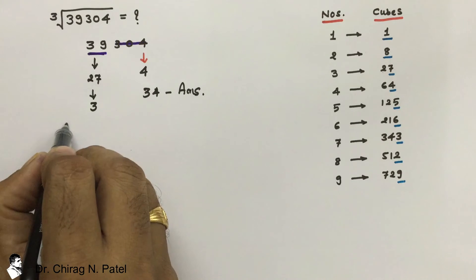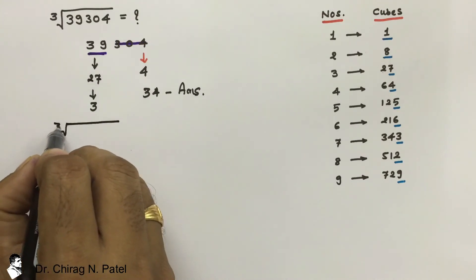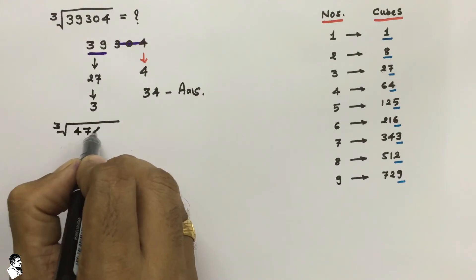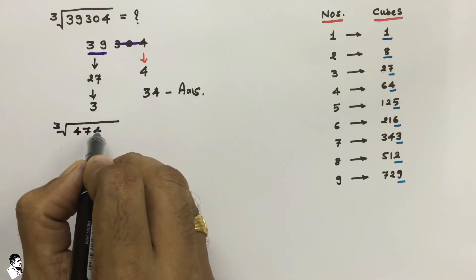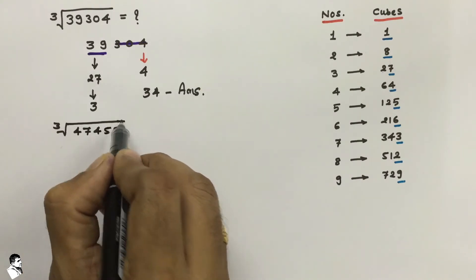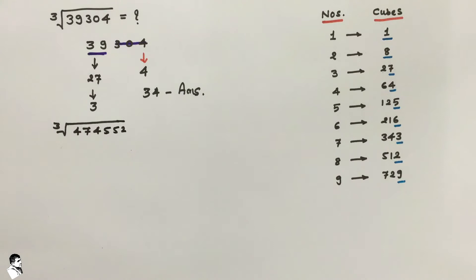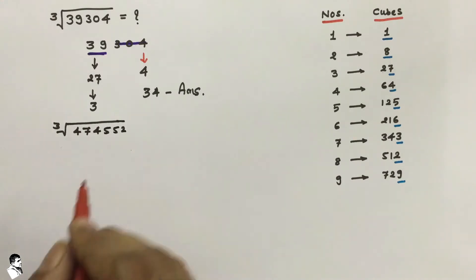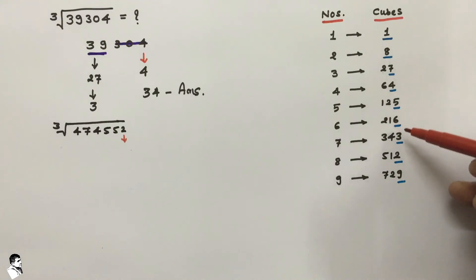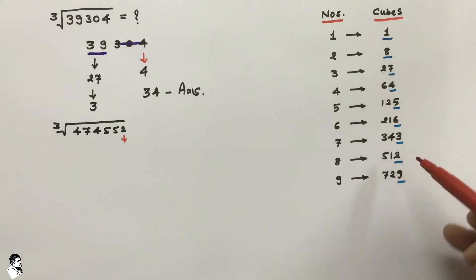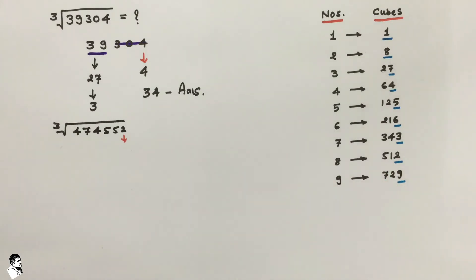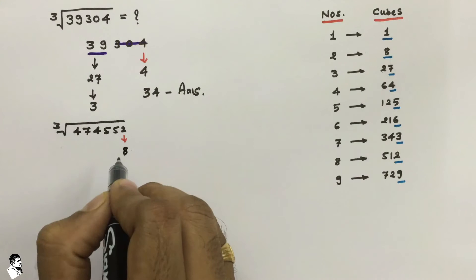Now try another value: find the cube root of 474552. Look at the last digit — that digit is 2. Find 2 in this table; it is available here and that value is the cube of 8. So the last digit of the answer is 8.